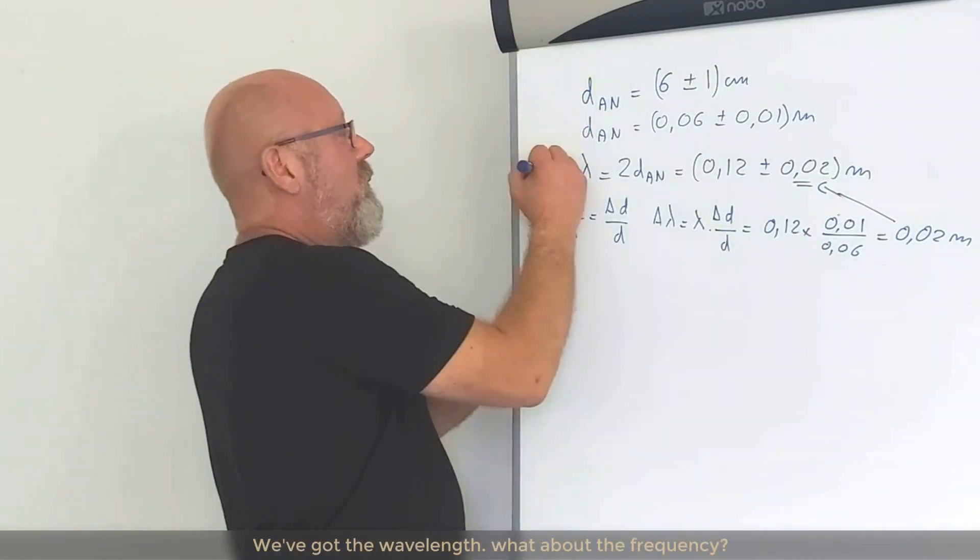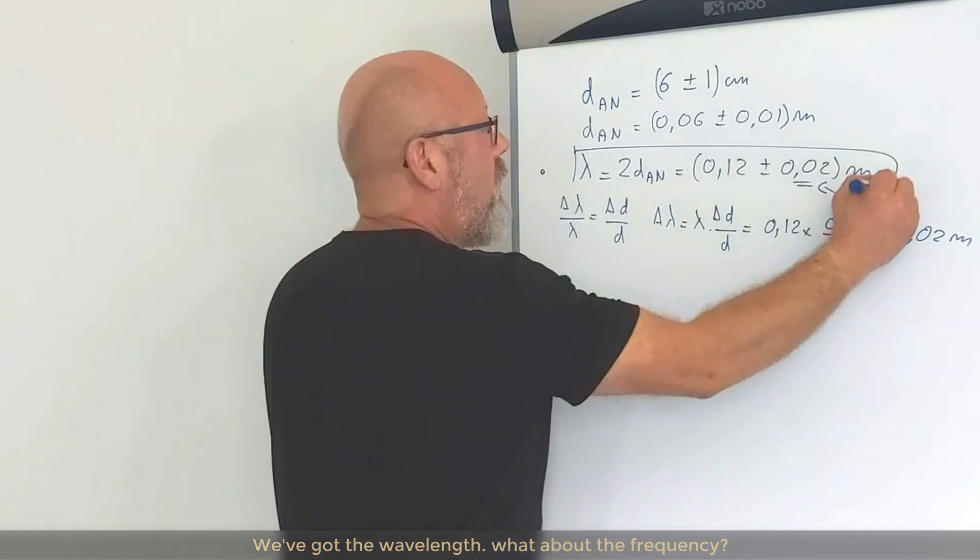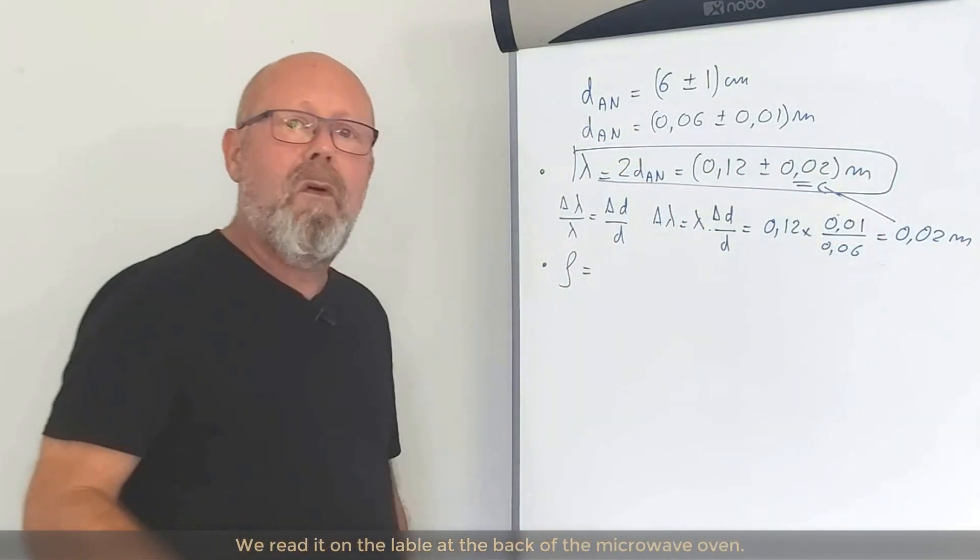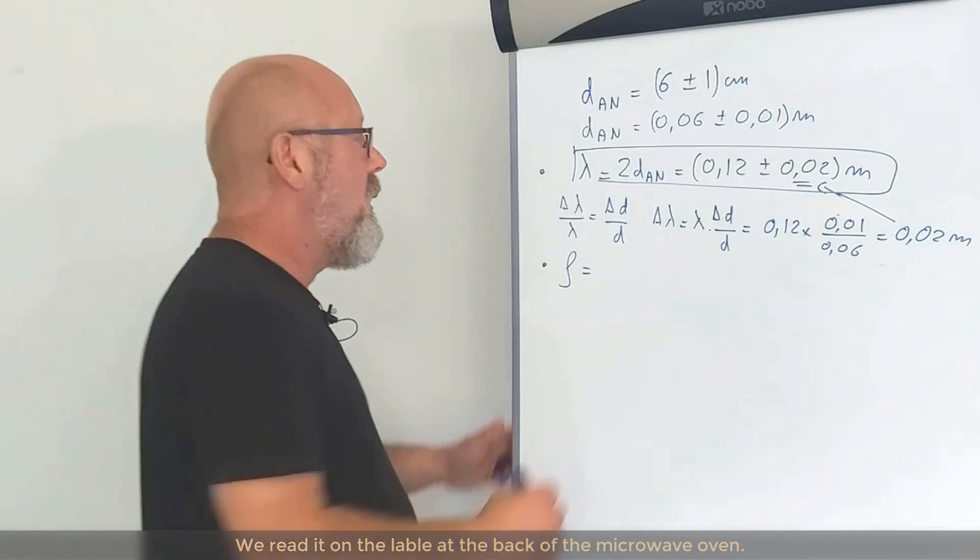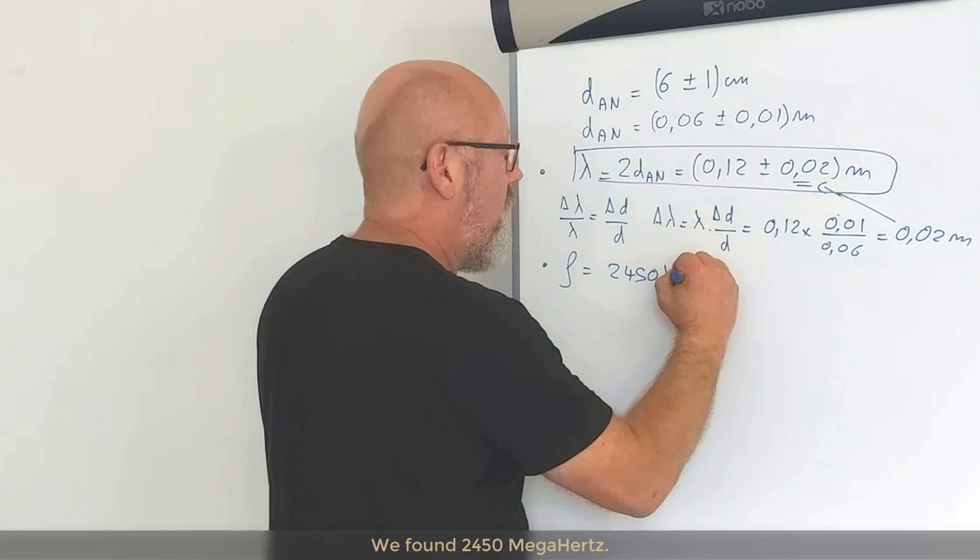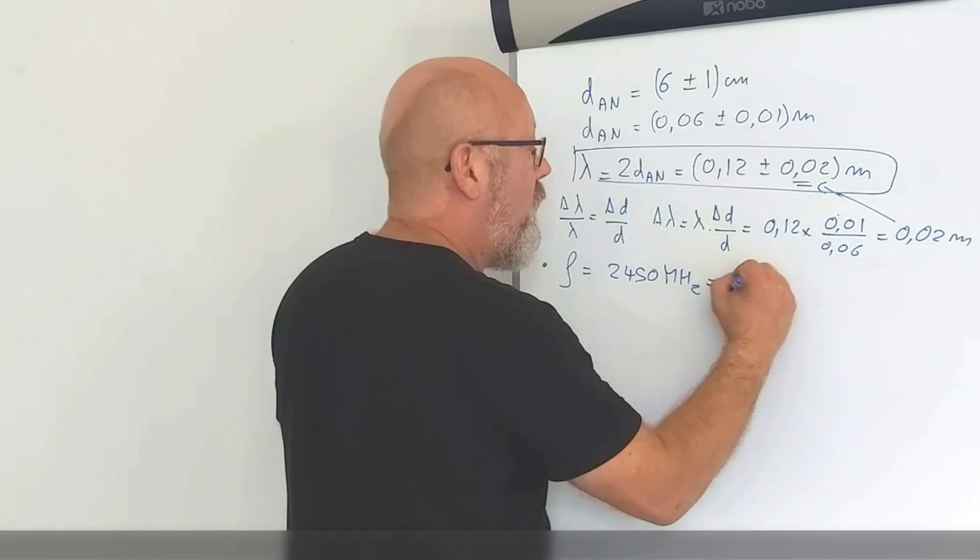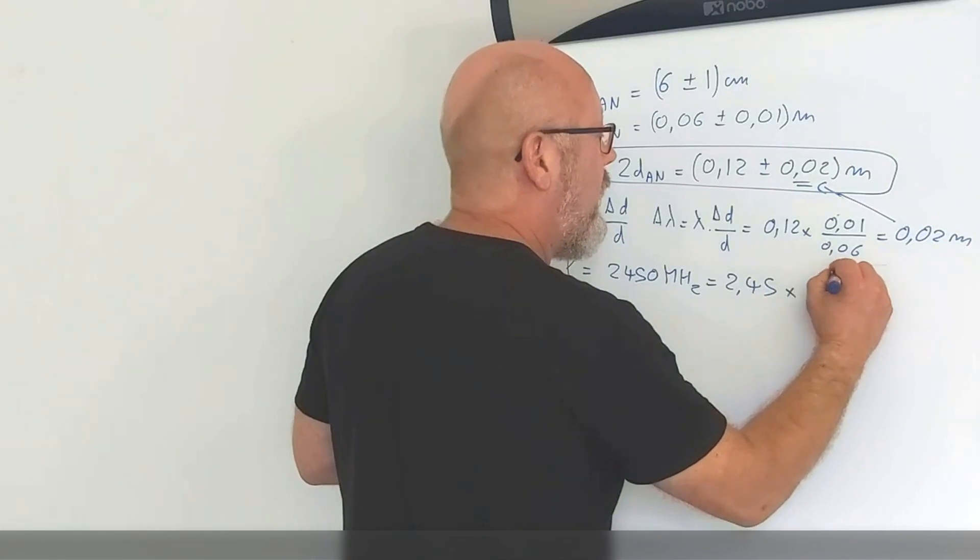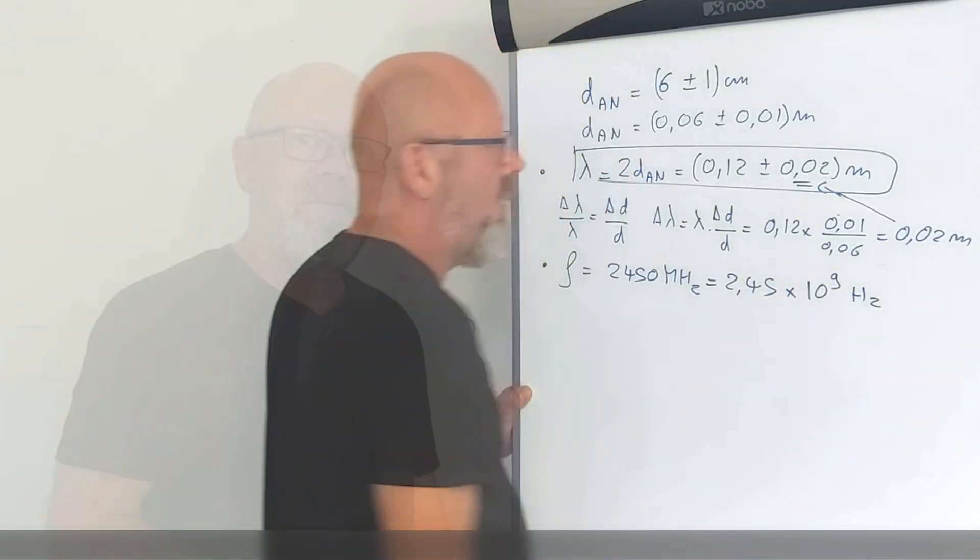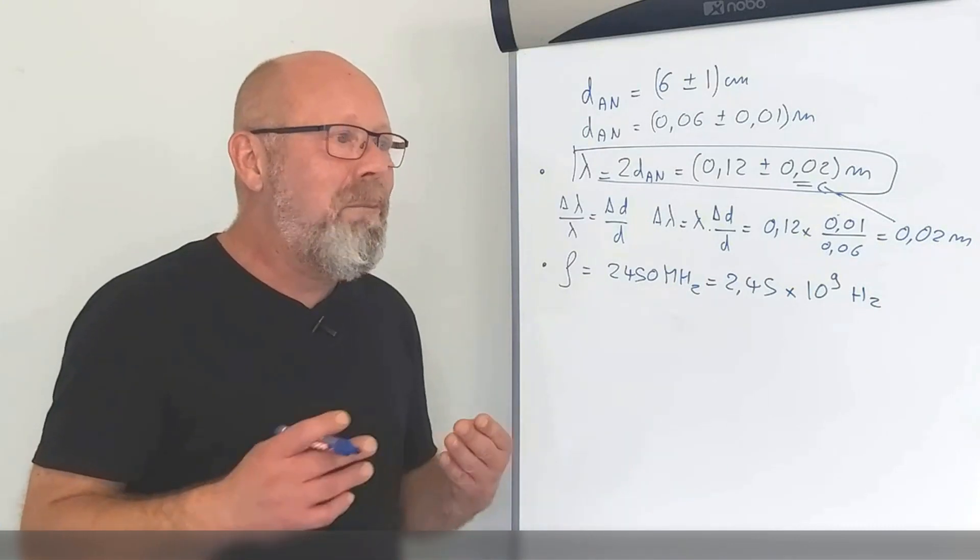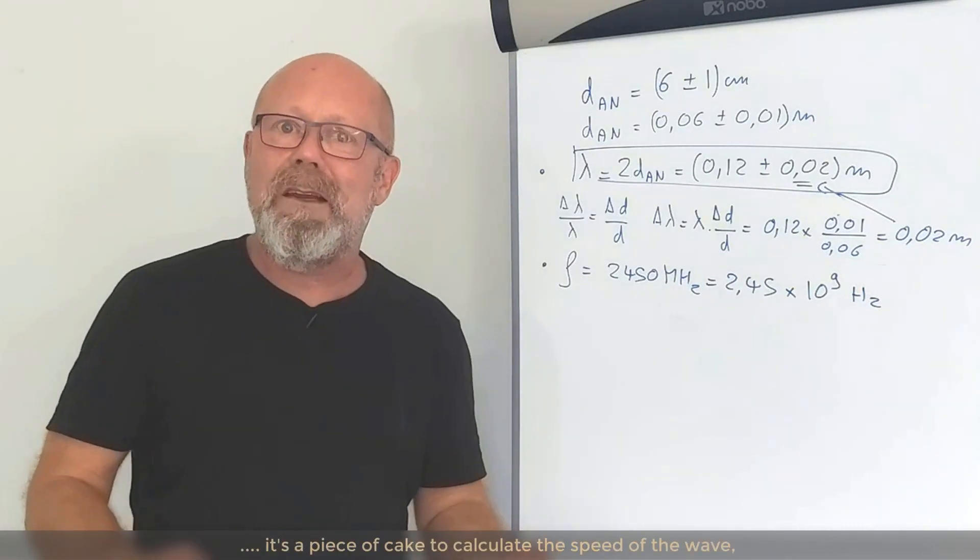So we got the wavelength, right? What about the frequency? We just read it on the label at the back of the microwave. We found 2450 megahertz, which is 2.45 gigahertz or 2.45 by 10 to the 9 hertz. Now that we have the wavelength and the frequency, it's a piece of cake to calculate the speed of the wave.